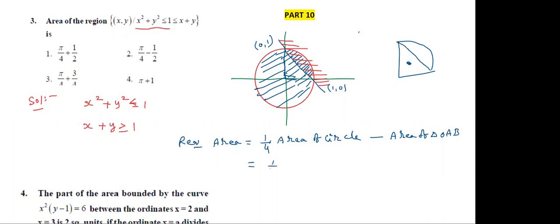So: (1/4) × area of circle. Area of circle is πR² where R = 1, so π × 1² = π. Minus the area of triangle OAB. O, A, and B — we know this length is 1 and this is also 1. Area = (1/2) × base × height. So the total is π/4 − 1/2.